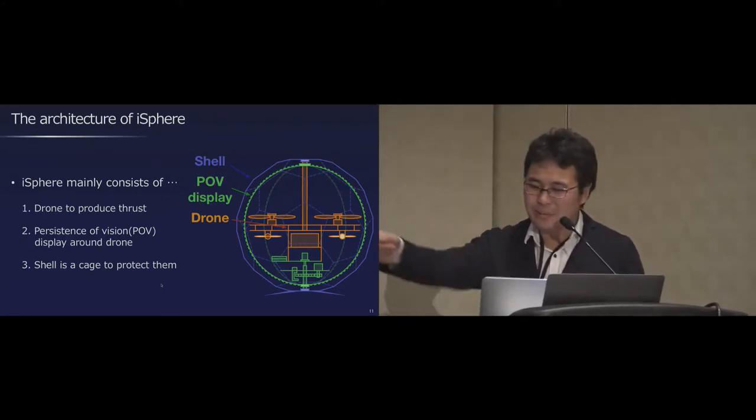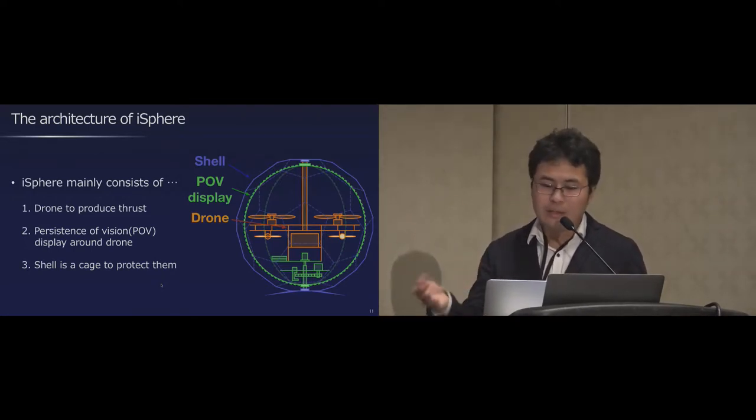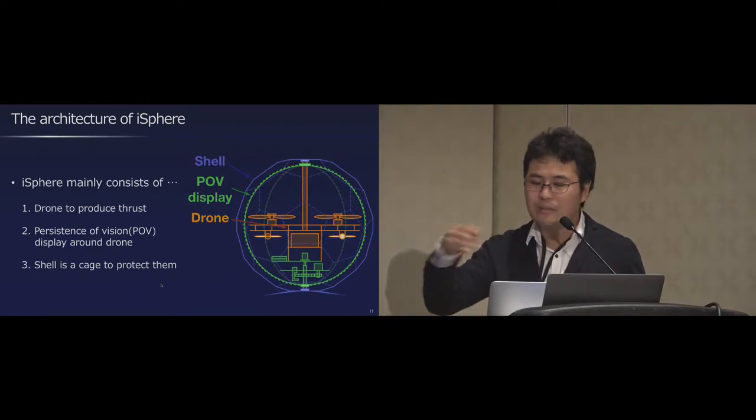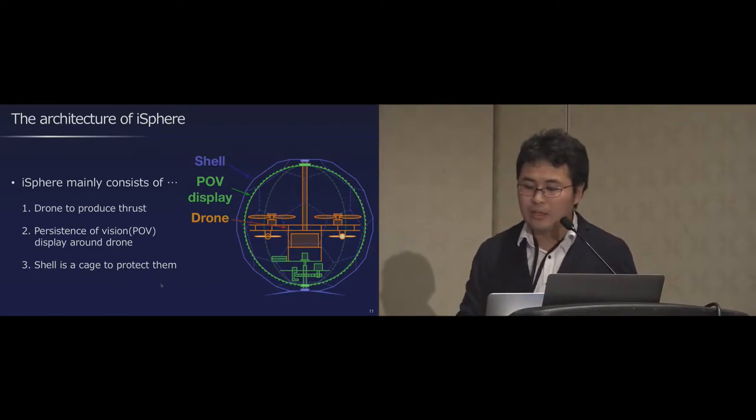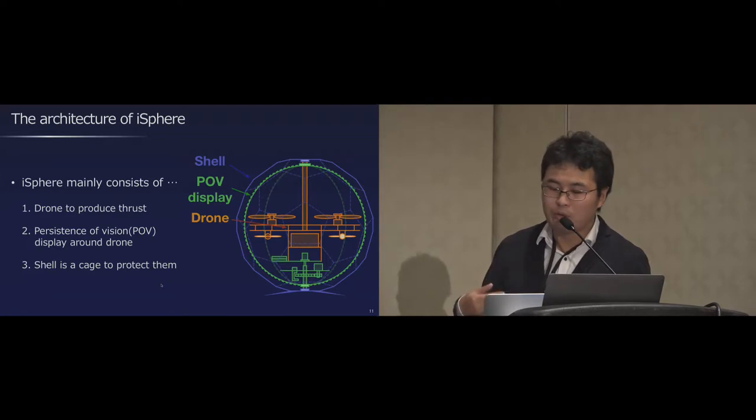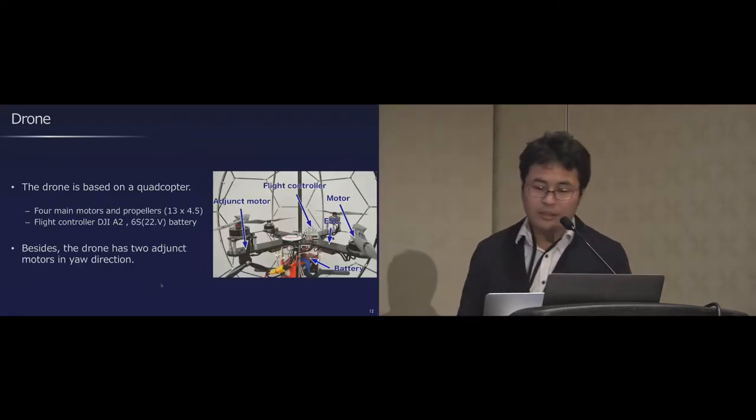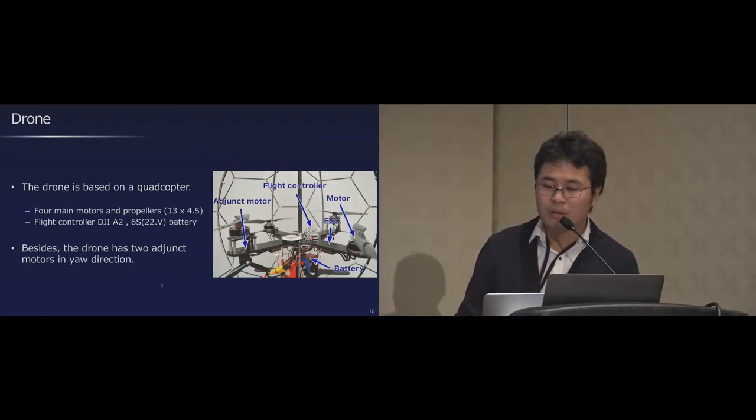From the inside, the built-in drone to produce thrust and the outer of it, the persistent vision display to create a spherical image around the built-in drone. The shell covering all other components to prevent them from hitting people or other things.